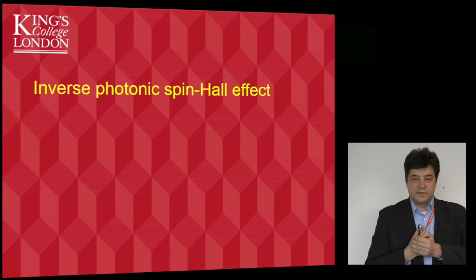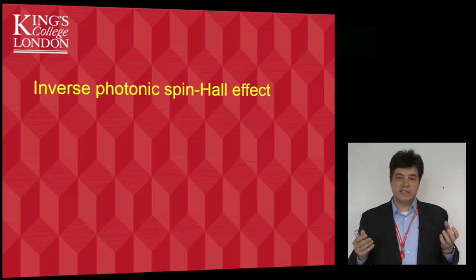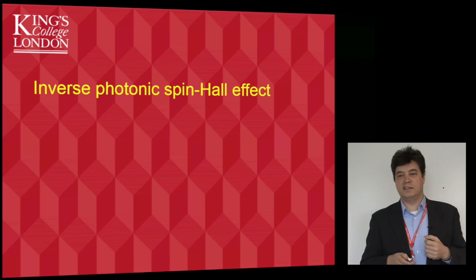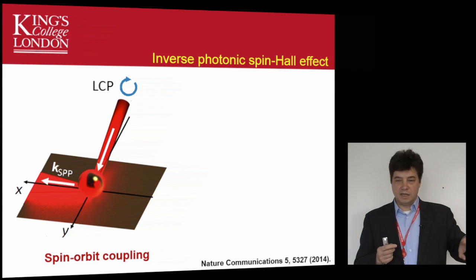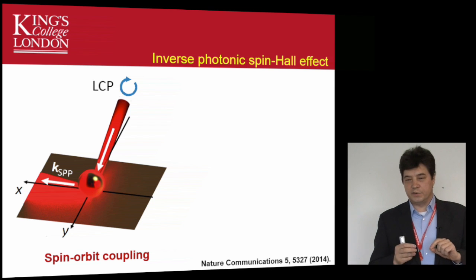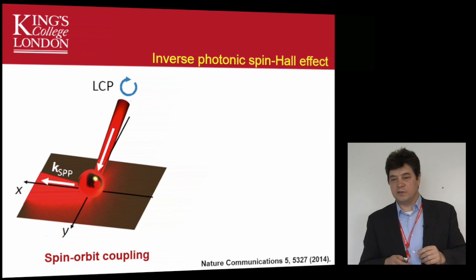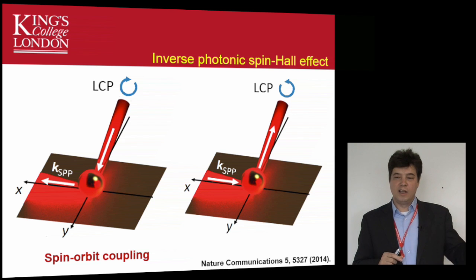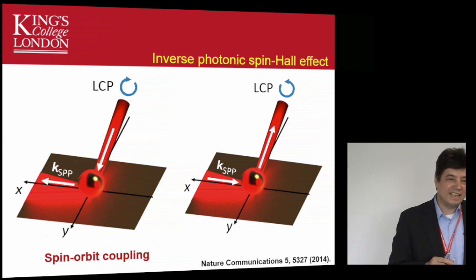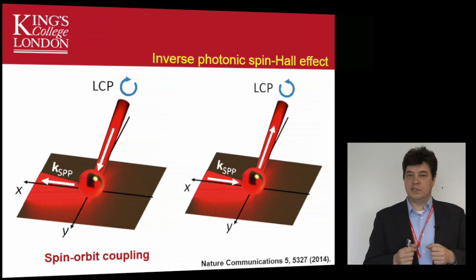We now have this photonic spin Hall effect that allows us to control directionality - but optics is reciprocal, so can we achieve an inverse photonic spin Hall effect? Indeed we can. In the direct effect, a gold nanoparticle on a gold surface is illuminated with left circularly polarized light, exciting surface plasmon polaritons to the left. In the reciprocal configuration, we consider the same geometry - gold surface, gold nanoparticle - but now we externally excite surface plasmon polaritons and let them propagate toward the nanoparticle and scatter off it.